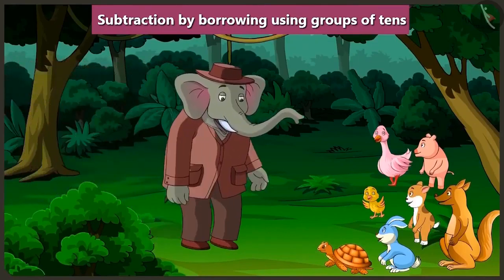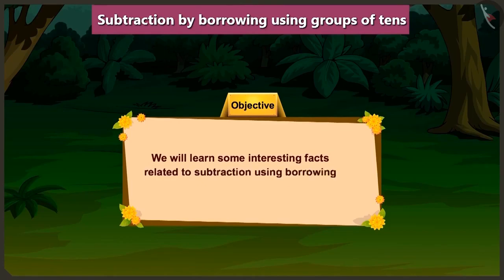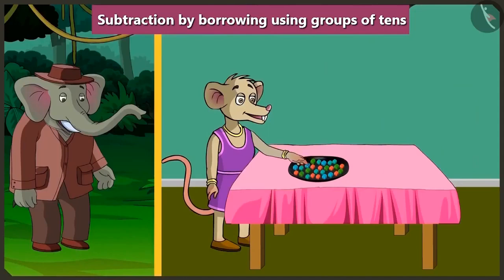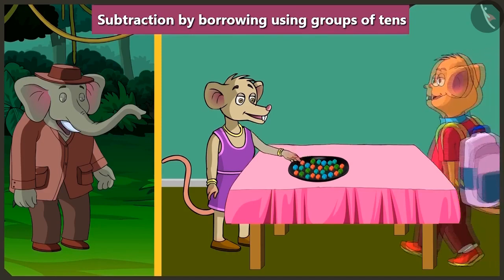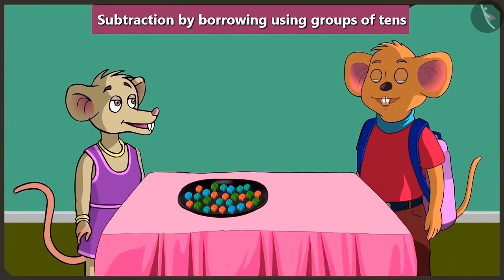Children, you have learned how to subtract 2-digit numbers with borrowing in the previous video. In this video, we will learn some interesting facts related to subtraction using borrowing with the help of the conversation between Chichi and Chuchu. Chichi is counting her jellies again and again. I think she is having some difficulty. Chuchu has come — he will definitely help Chichi. Hello, Chichi. What happened? Why are you so upset?